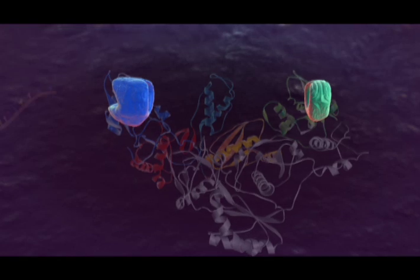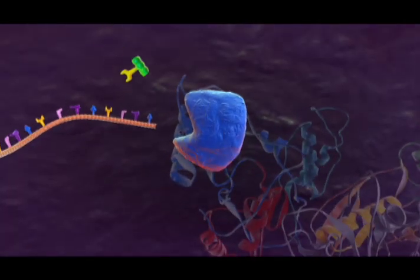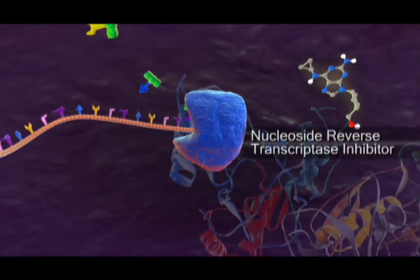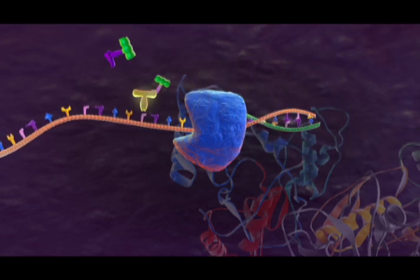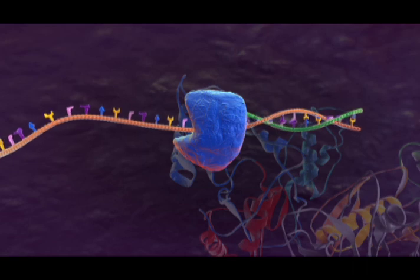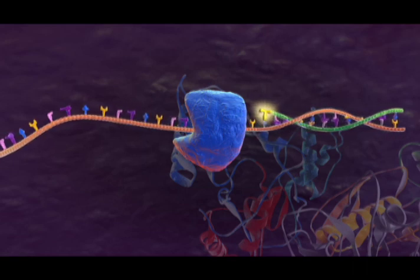Reverse transcriptase is targeted by two classes of drugs. Nucleoside reverse transcriptase inhibitors become incorporated into elongating DNA strands as competitive substrates for DNA polymerase, resulting in chain termination.